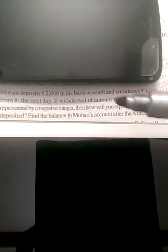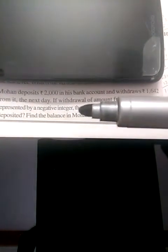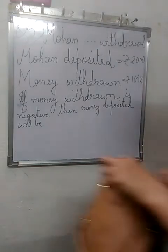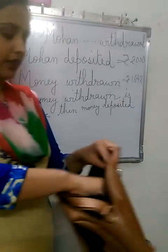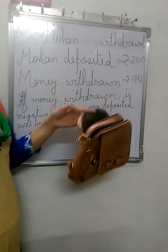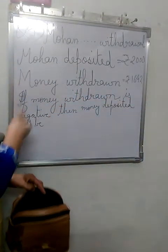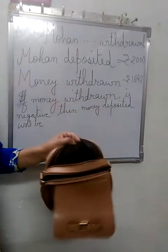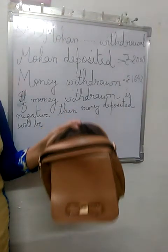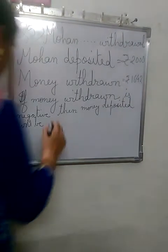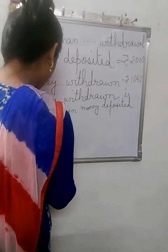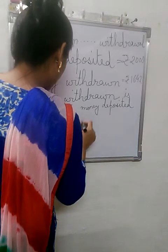Money withdrawn. Now if withdrawal of amount from the account is represented by a negative integer, then how will you represent the amount deposited? If money withdrawn is negative, then money deposited will be plus — it will be a positive integer.